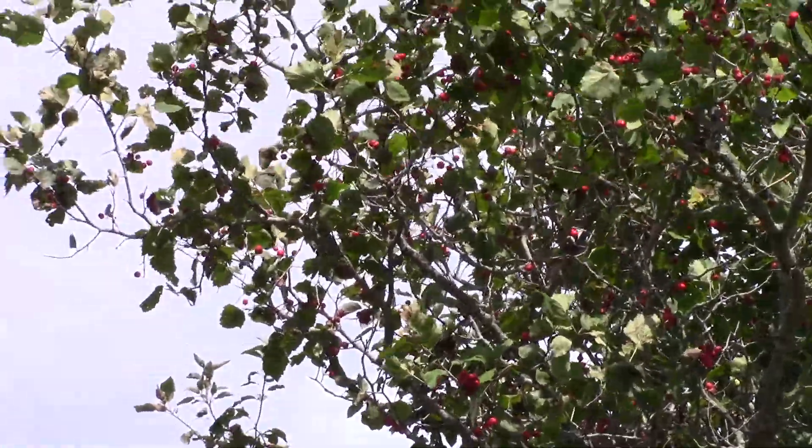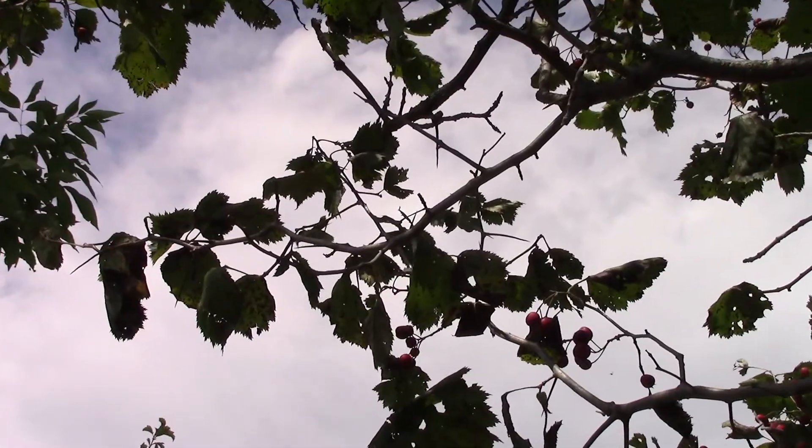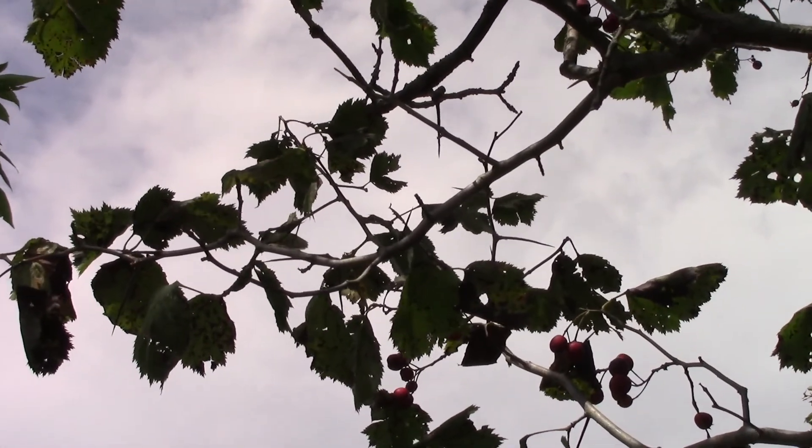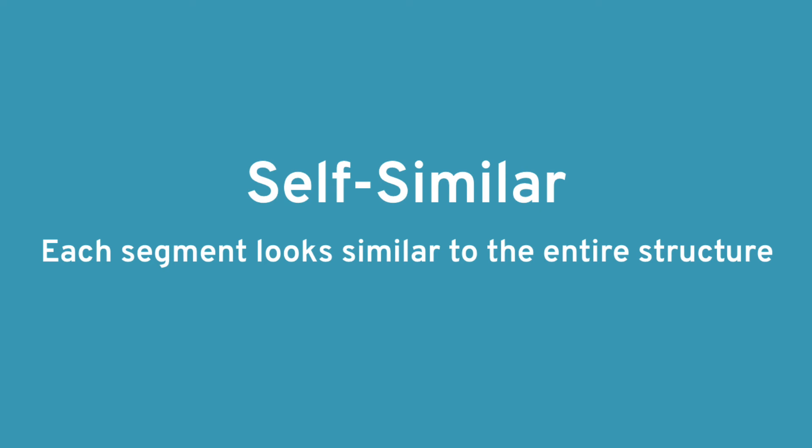Each of these branches has more branches which branches again right down to the twig on which hangs the leaves. Just this branch of a tree looks similar to the tree as a whole. This is called self-similar. Each segment of the fractal looks similar to the entire structure.